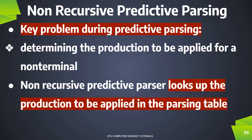We have to determine which production is optimal and determine which parts are optimal. The main issue is to apply the parts to the production. We have to choose the right decision. We need to choose the production and to do that, we need to use a parsing table.